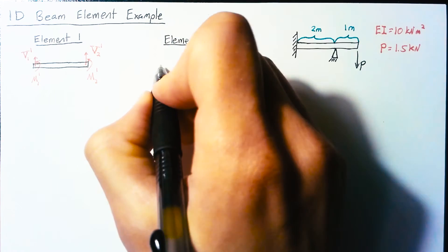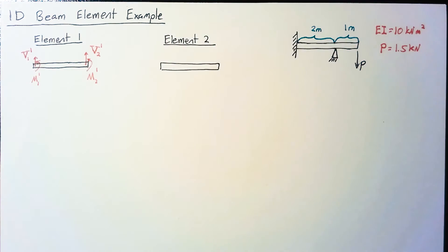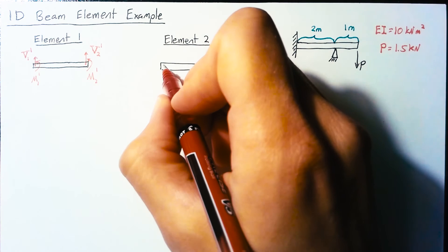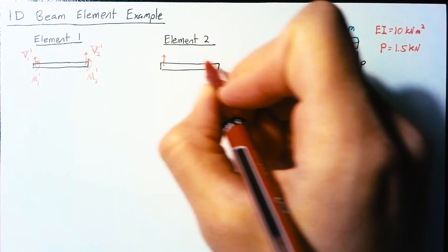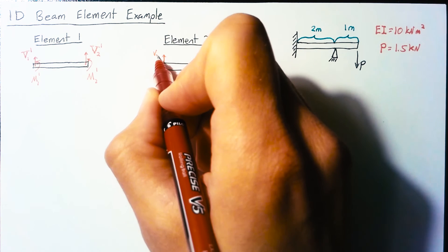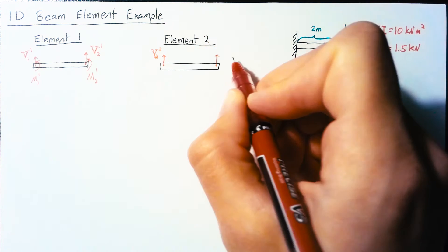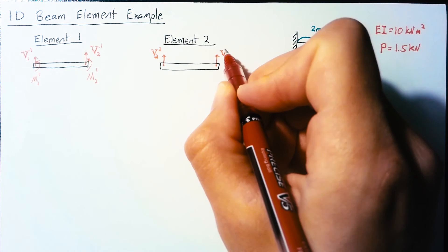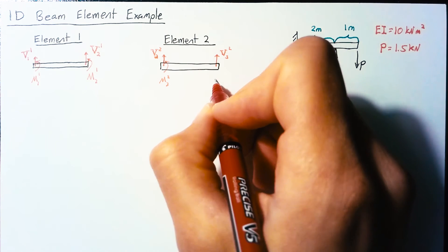For element two the forces will be similar. This time we're looking at nodes two and three, everything on element two. So this will be V2 on element two and V3 on element two, and the moments the same way.